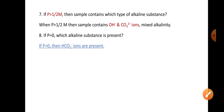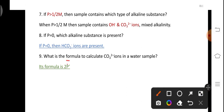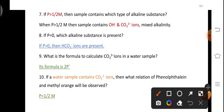If P = 0, which alkaline substance is present? In this case bicarbonate ions are present. What is the formula to calculate carbonate ions in a water sample? From the table, to calculate carbonate ion concentration we use the formula 2P. If a water sample contains only carbonate ions, what relation between phenolphthalein and methyl orange will be observed? If only carbonate ions are present, the relation will be P = M/2, or equivalently 2P = M.